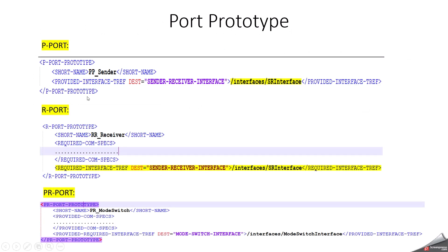Now let's see how to configure or design a P-Port. Here I have selected the P-Port and named it PP_sender, because I used the sender-receiver interface — you can keep any short name. Similarly for R-Port, I named it RR_receiver. Based on your requirement, if you want required com specs and a receiver, you can select it, and here also I selected the sender-receiver interface. For the PR-Port, I selected a mode-switch interface and named it PR_Modeswitch — it performs a dual role as required and provided port.